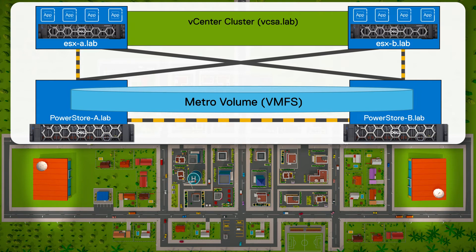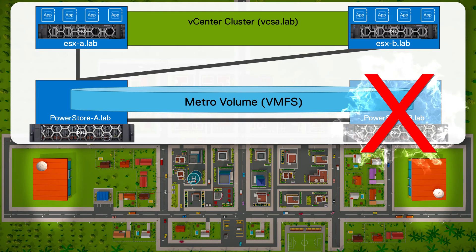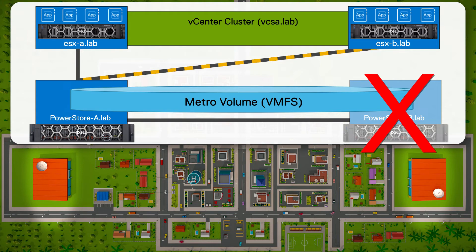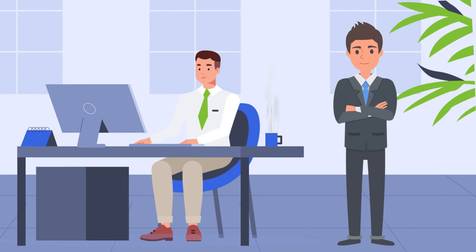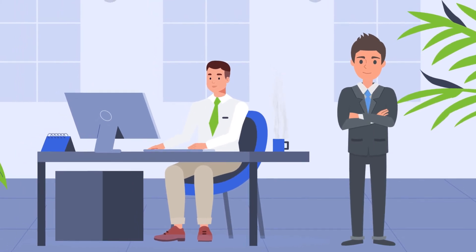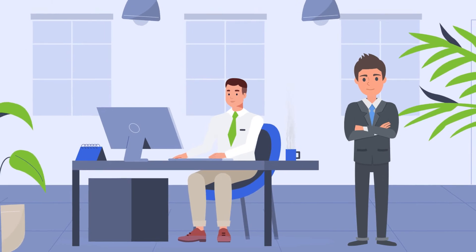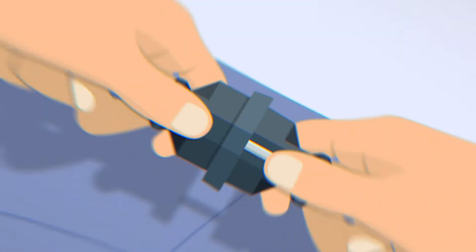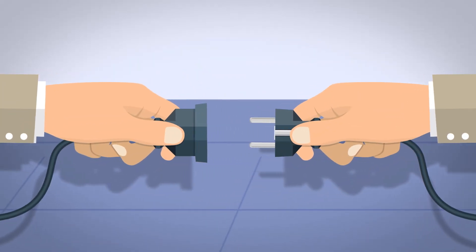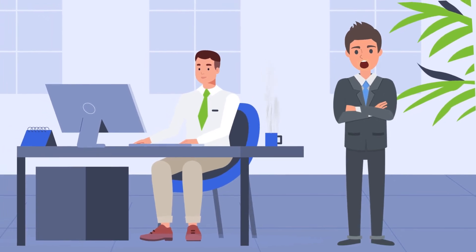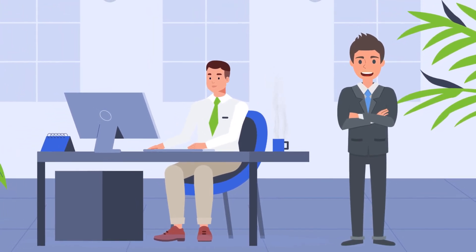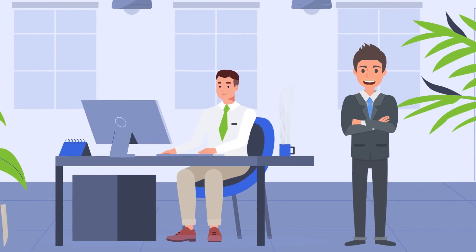The manager likes that, but is afraid of what would happen if one of the arrays failed. The admin tells him not to worry — the hosts would use the active but not optimal paths to the remote array. Although the manager trusts the administrator, he is still not convinced and asks if this scenario can be tested. The administrator likes this idea and disconnects the power cords for the new PowerStore. At first the manager is shocked, but is greatly relieved when he sees that production is undisturbed.